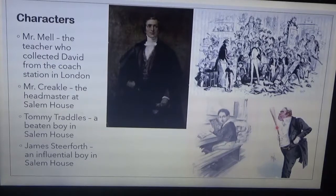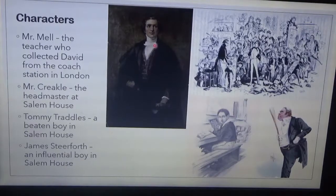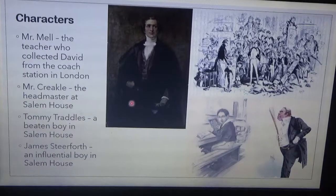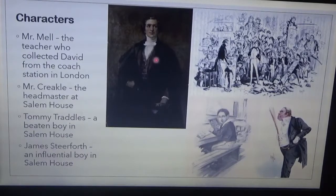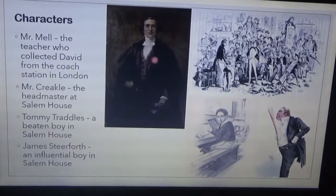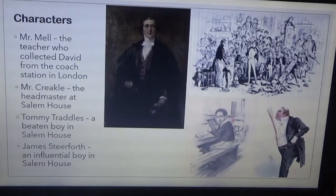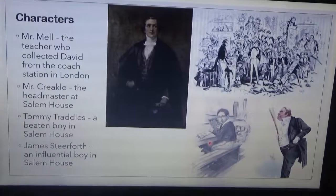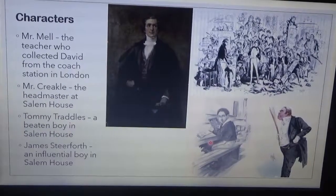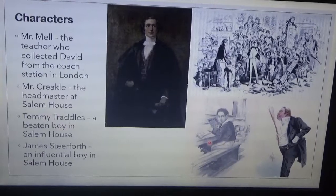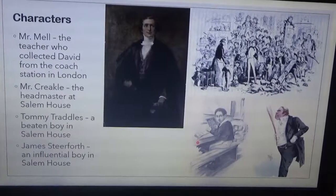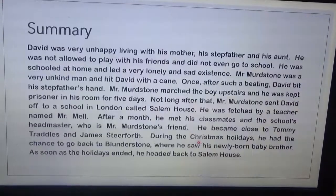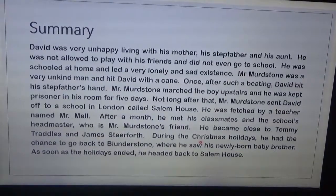The next character is the headmaster of Salem House — his name is Mr. Creakle. He loves beating boys; the only boy he never beat was James Steerforth. James Steerforth is an influential boy in Salem House — he is older, in fact six years older than David. Another boy is Tommy Traddles. He's an unlucky boy in Salem House because he takes all the blame for the other boys.